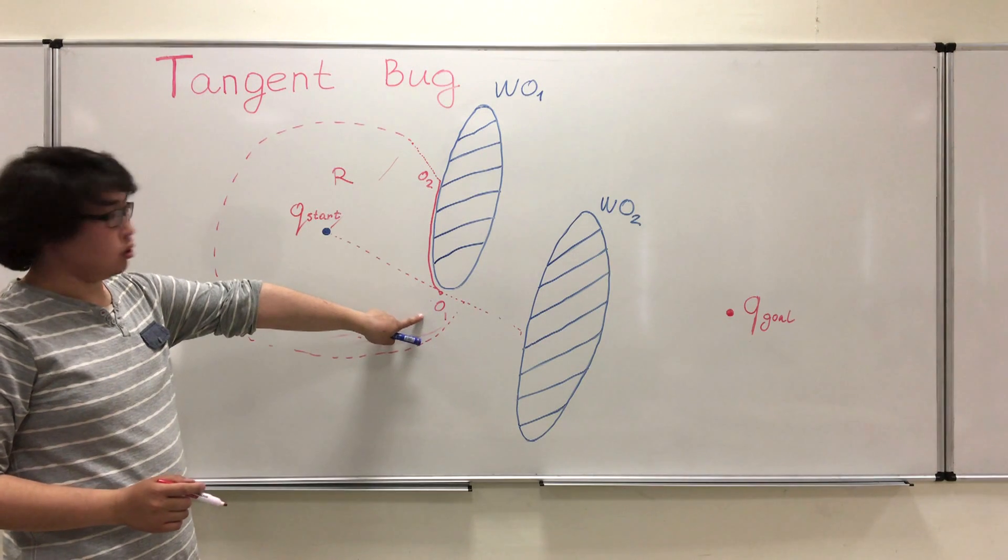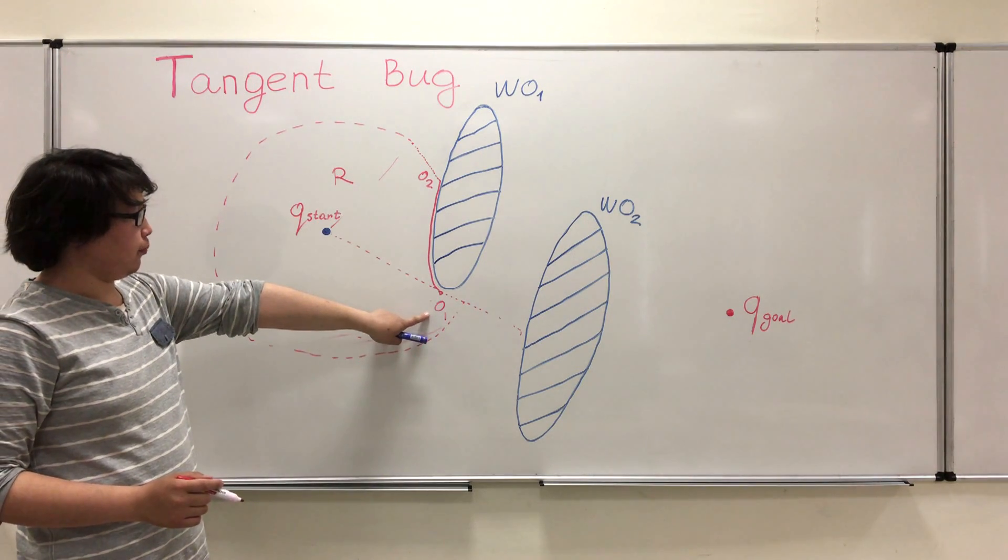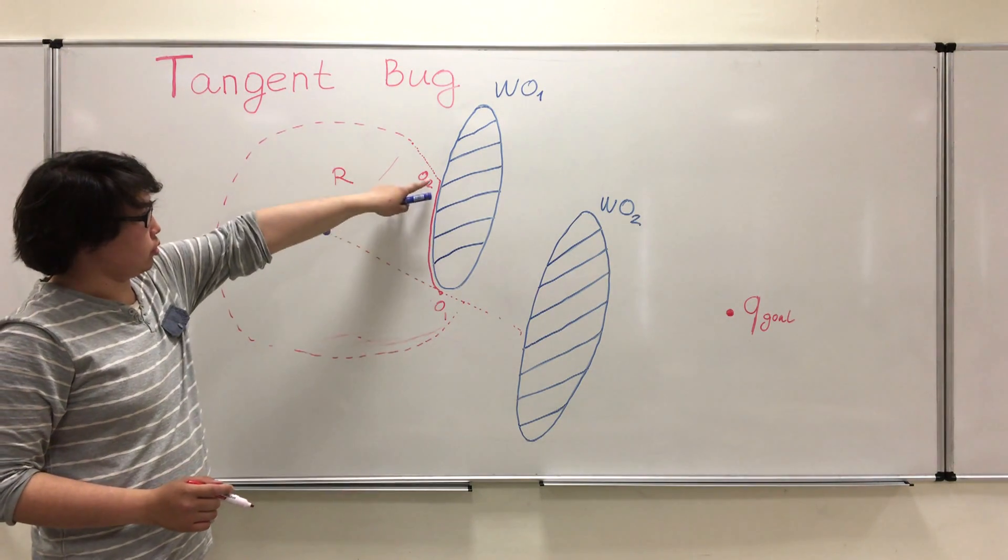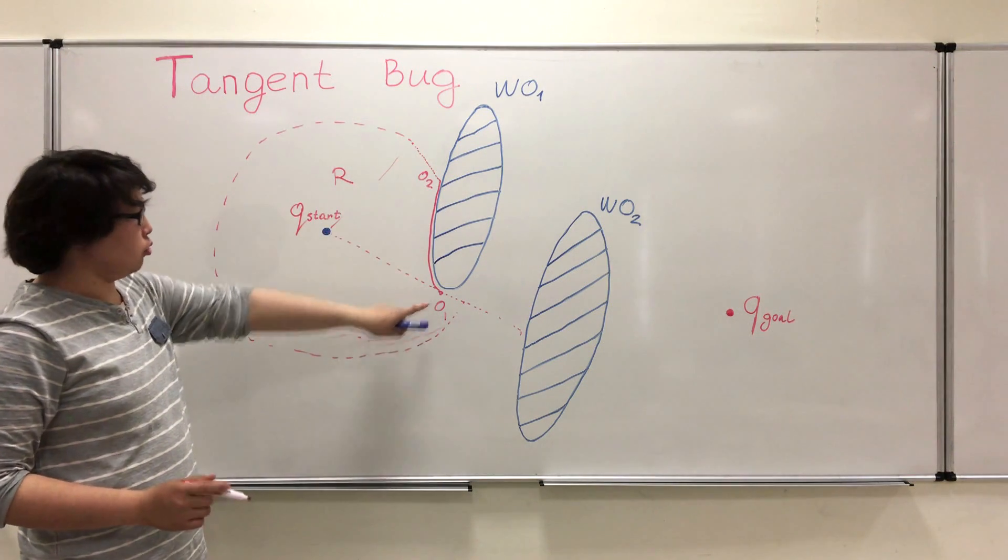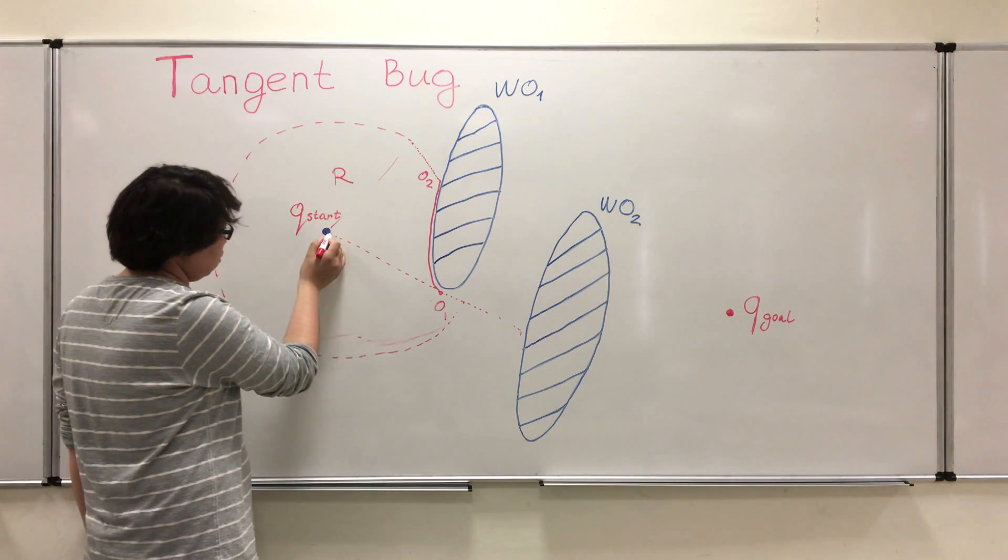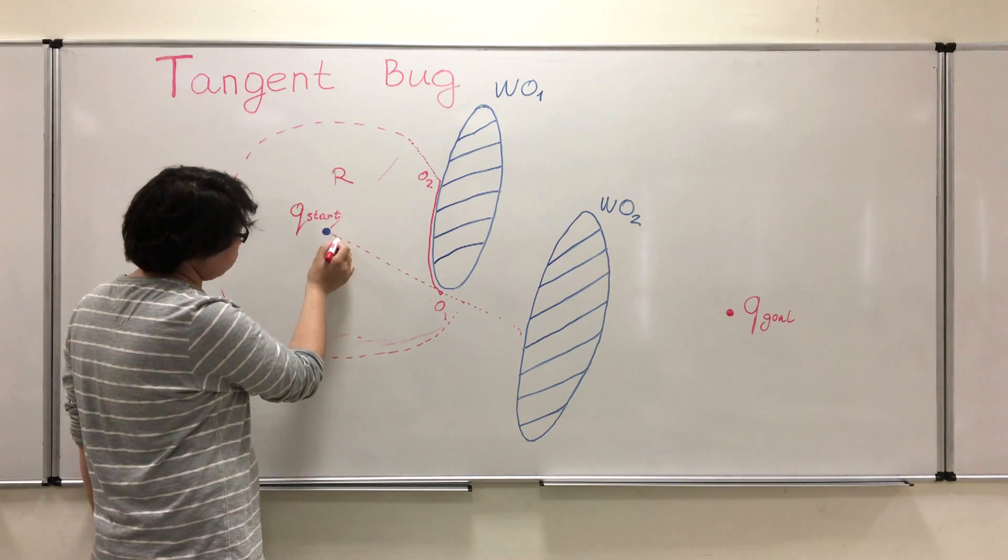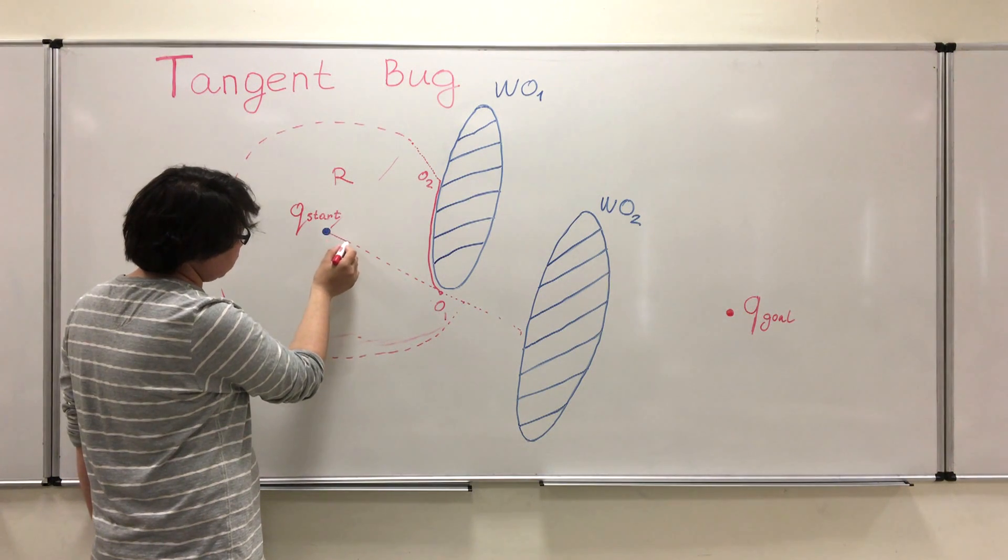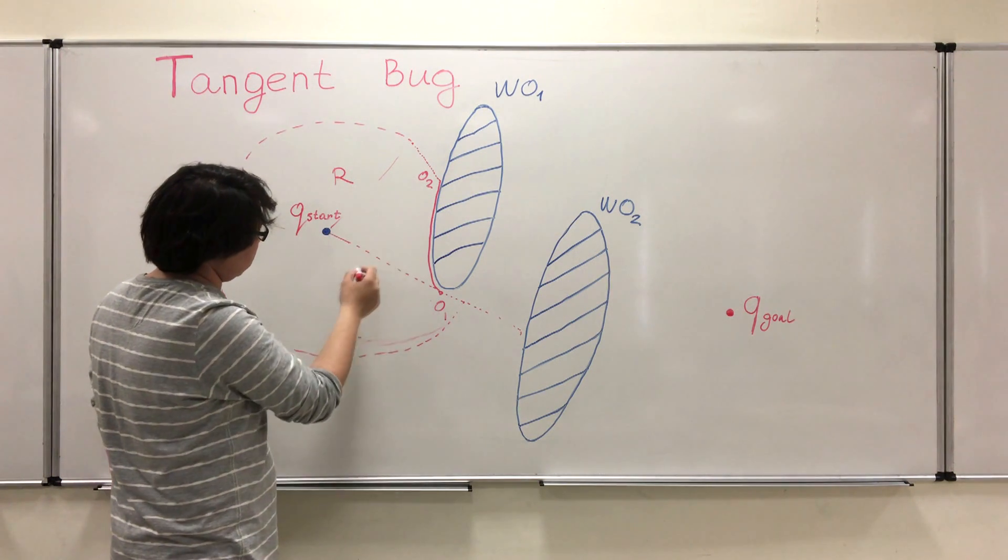This discontinuity is much closer than this discontinuity. And the robot decides to go to this discontinuity. Going here we also update our information about the environment.